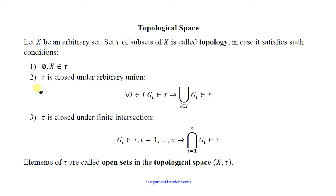The second one: tau is closed under arbitrary union, which means if we take any finite or even infinite number of sets from tau, then the union of them will belong to tau.